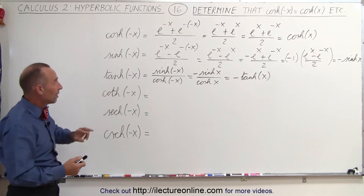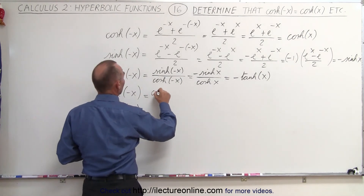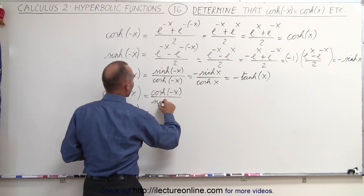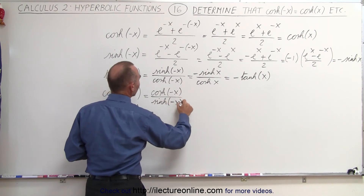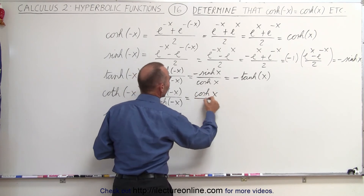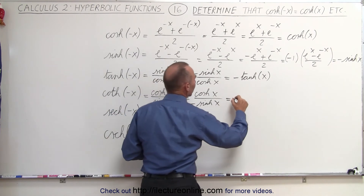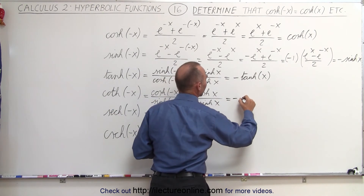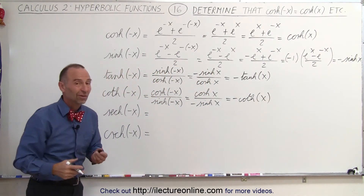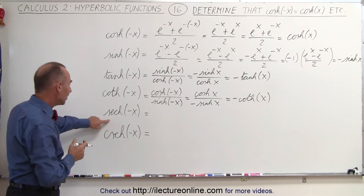The hyperbolic cotangent should be exactly the same, because that's the inverse of the tangent. So here we have the hyperbolic cosine of a negative x divided by the hyperbolic sine of a negative x, which is equal to the hyperbolic cosine of a positive x divided by the negative of the hyperbolic sine of x, so this becomes the negative of the hyperbolic cotangent of x, just as expected since the hyperbolic cotangent is the inverse of the hyperbolic tangent.